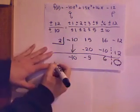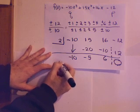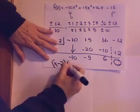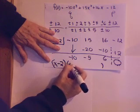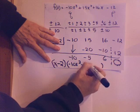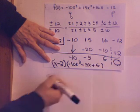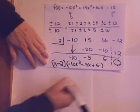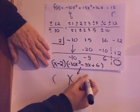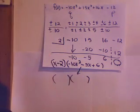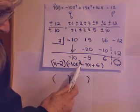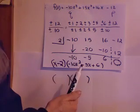That means x minus 2 divides into that polynomial. And when I divide it, I get for my answer negative 10x squared minus 5x plus 6. How do I get the rest of the answers? I factor this. What are possible factors of this polynomial? After multiple tries, I realize this isn't going to factor. So, what do I do to get the rest of the zeros? Quadratic formula.